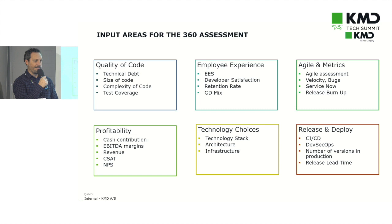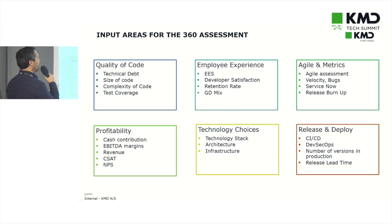Some of it is obviously about quality of code. Something about employee experience. Something about agile and metrics — the way you work. Some financial numbers, profitability. Some technology choices. And of course, how do we deploy and release.